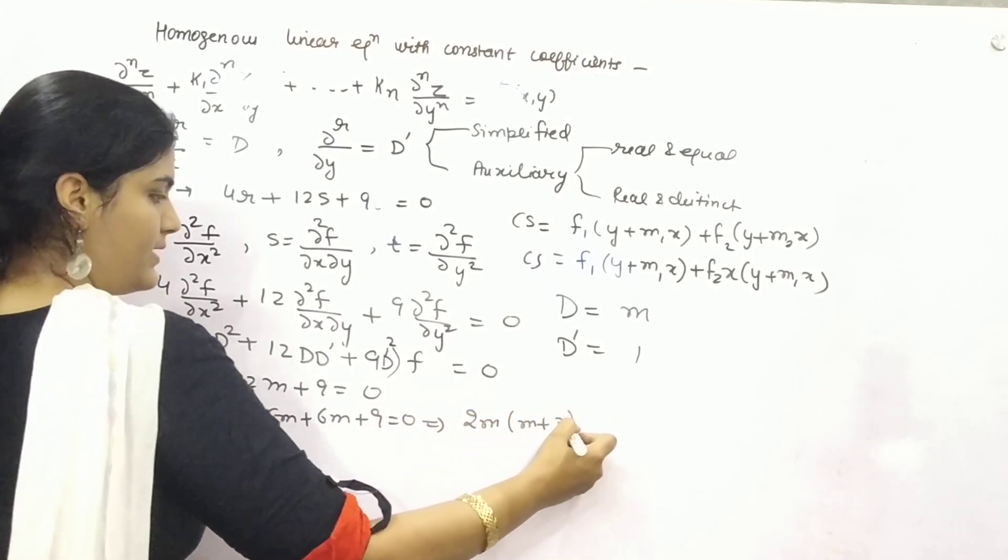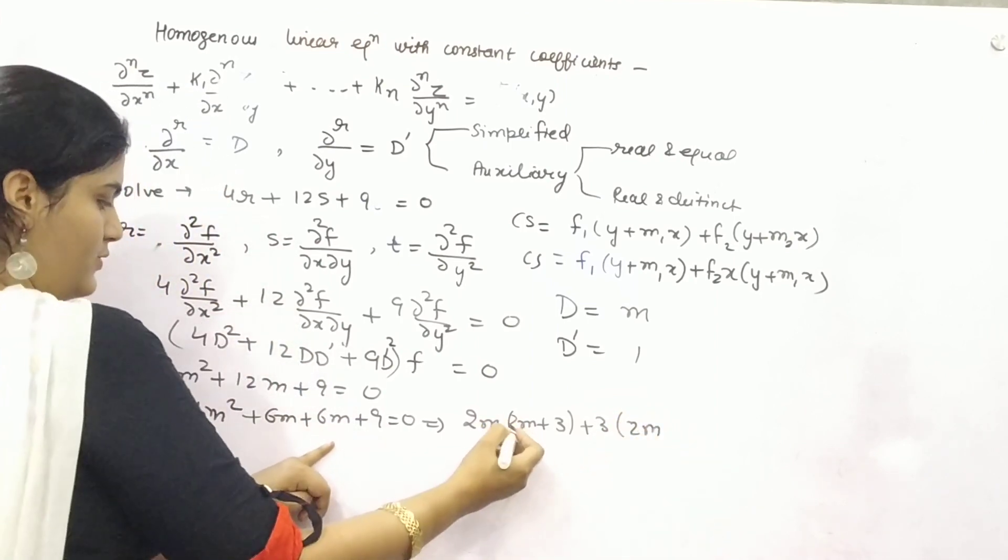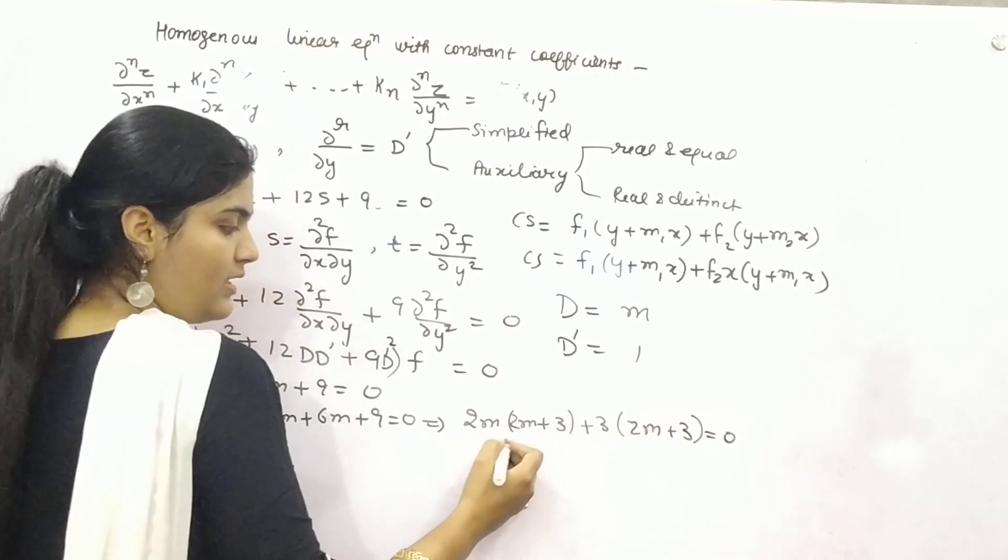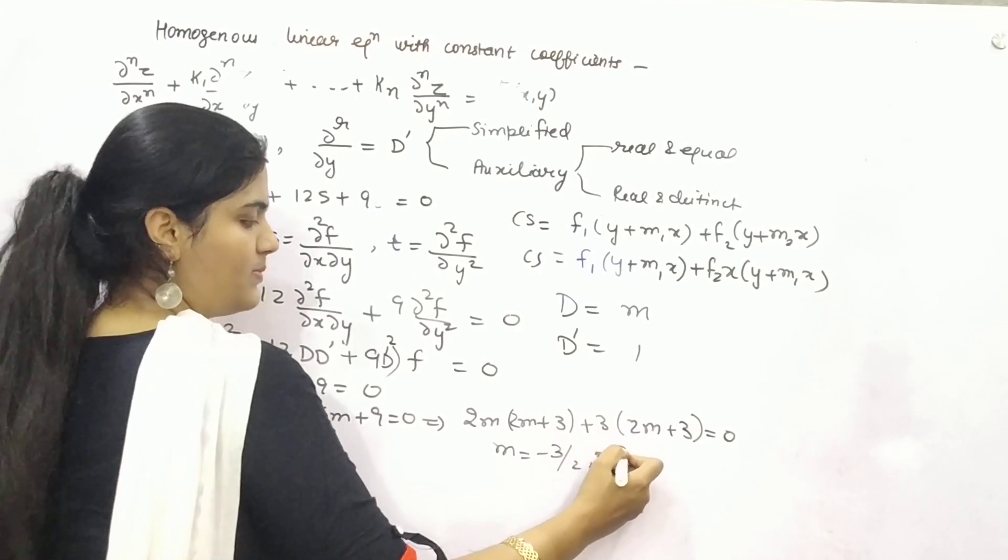Take 2m common, m plus 3, take 3 common, 2m plus 3. From here, if you put 2m plus 3 equals 0, m will be minus 3 by 2 and m will be minus 3 by 2.